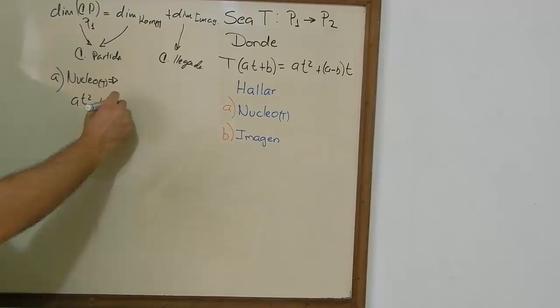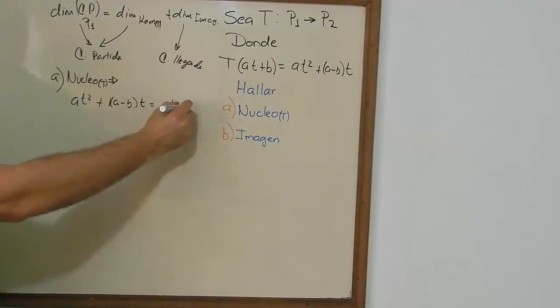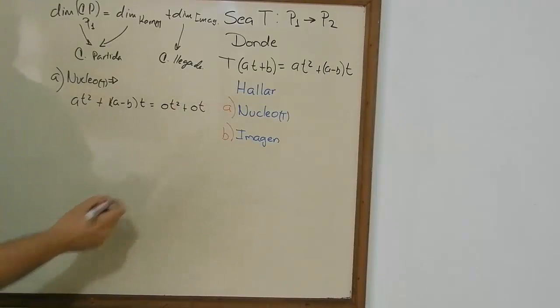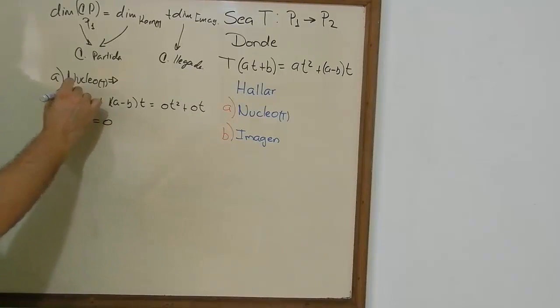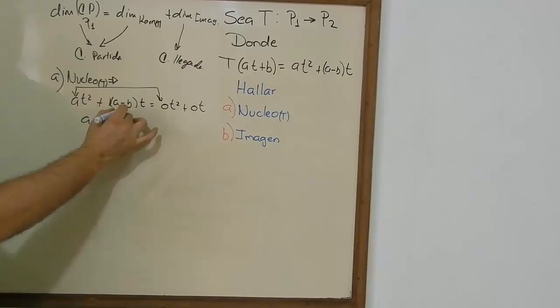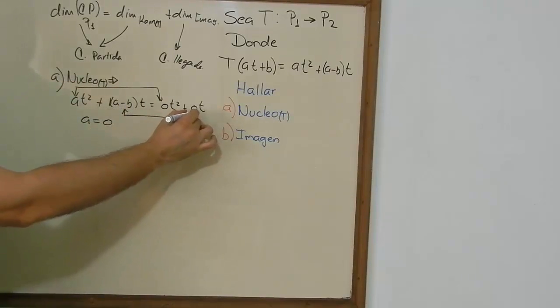So we take A times t² plus (A minus B)·t and that's equal to 0·t² plus 0·t. So for this, we know that A is equal to 0. That's pretty easy. And A minus B is equal to 0.